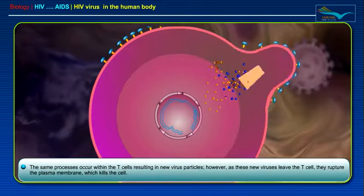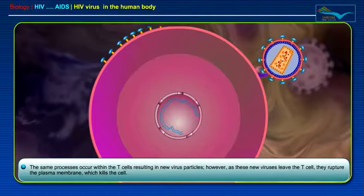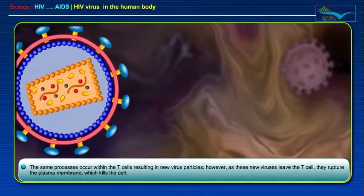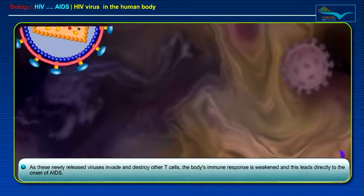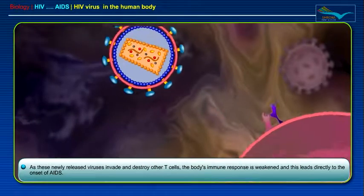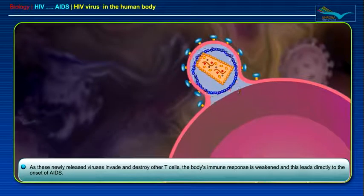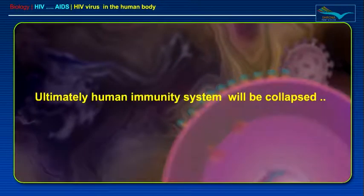The same processes occur within the T-cells, resulting in new virus particles. However, as these new viruses leave the T-cell, they rupture the plasma membrane, which kills the cell. As these newly released viruses invade and destroy other T-cells, the body's immune response is weakened and this leads directly to the onset of AIDS.